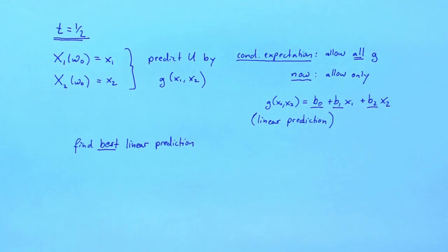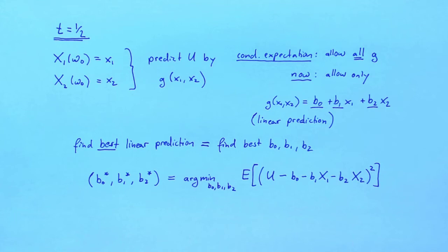To find the best linear prediction, we have to find the best parameters b0, b1, and b2. Let's call the optimal parameters b0 star, b1 star, and b2 star. The optimal parameters minimize the expected squared prediction error.